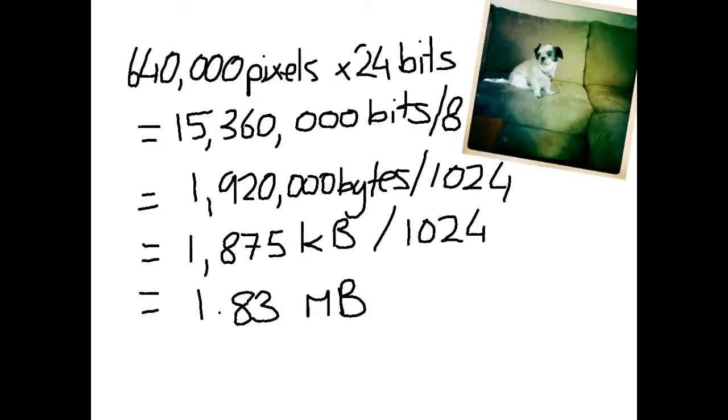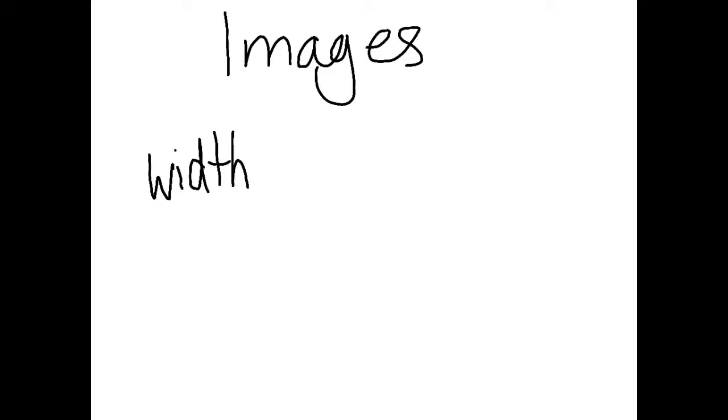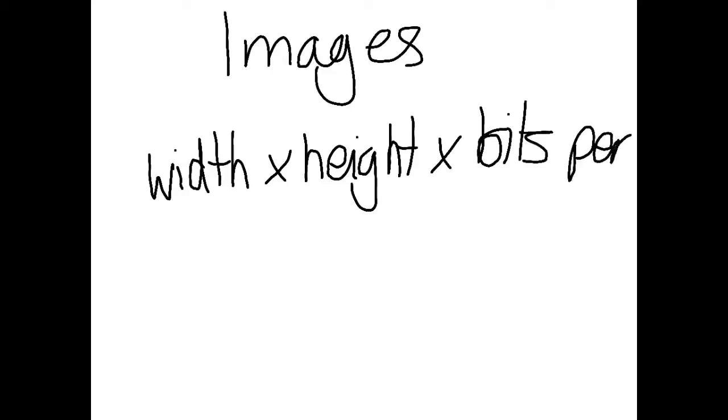So my little image, assuming that was 800 by 800 and it used 24 bits of information per pixel, would be a file of size 1.83 megabytes. So the summary is for an image file we have the width times it by the height times it by the bits per pixel, and that will give us the size of an image file.